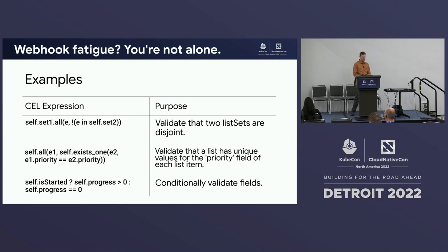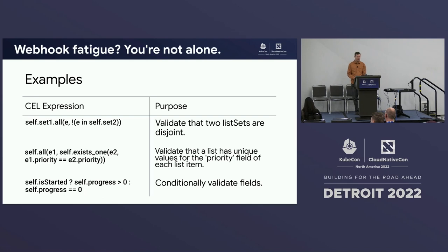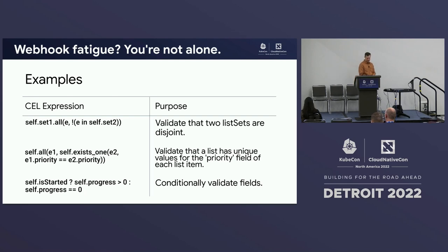In the first example, what we're doing is verifying that two sets are disjoint — using the 'all' comprehension to iterate over one set and checking that none of those elements are in the second set. The second example is more complicated: we're taking a list of objects where every object has a priority field, and we're making sure that no two of those objects have the same priority value. This is on the edge of what you can do with CEL and it's not super obvious how to write it. I wanted to show a more difficult example to give people an idea of where the limits of CEL might be.